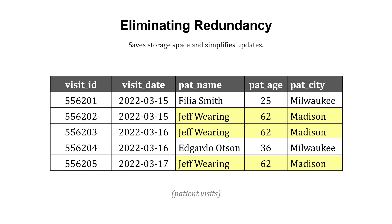Let me talk about the importance of this. Let's imagine we have a patient visits table. We're tracking every row as a different visit for a patient. We've got an ID that uniquely identifies the visit, the date of the visit, but we've also got the name of a patient, their age, and their city. The issue here is that we have to re-enter their name, their age, and their city every time they make a visit.